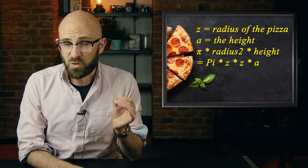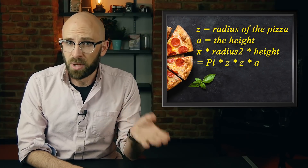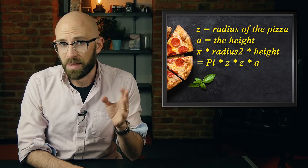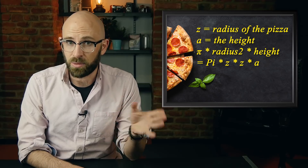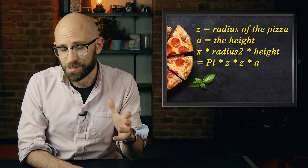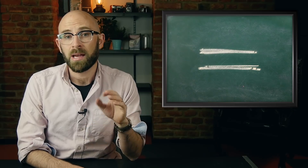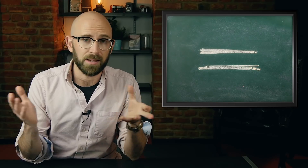Bonus Fact: The mathematical volume of pizza is pizza. If z is the radius of a pizza and a is the height, then pi × z² × a = pi·z·z·a, i.e., "pizza." And for another bonus fact, the equal sign was invented in 1557 by Welsh mathematician Robert Record.